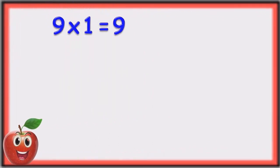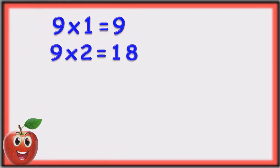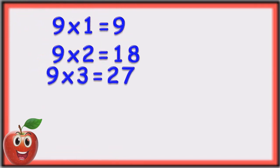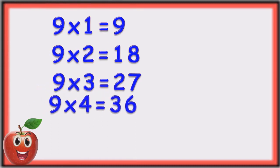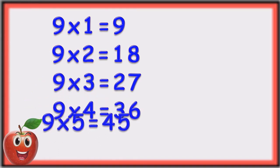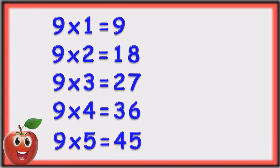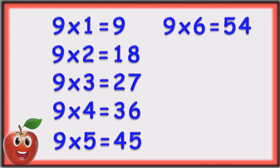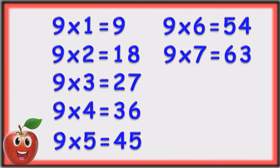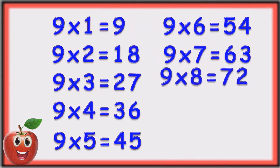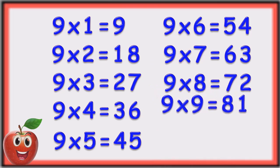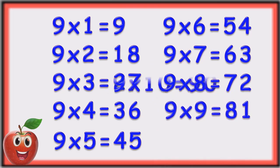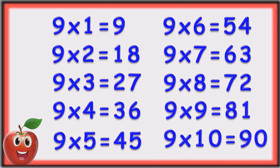Nine ones are nine. Nine twos are eighteen. Nine threes are twenty-seven. Nine fours are thirty-six. Nine fives are forty-five. Nine sixes are fifty-four. Nine sevens are sixty-three. Nine eights are seventy-two. Nine nines are eighty-one. Nine tens are ninety.